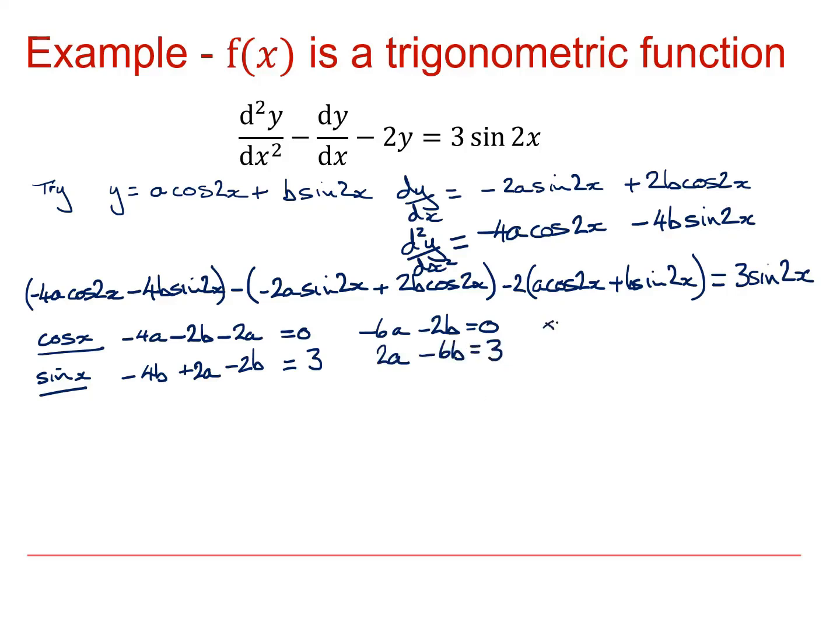Triple the top one and take them away. I'm going to end up with 20a is equal to 3. So a is equal to 3 over 20. And if a is 3 over 20, plugging that into here, I'm going to get that b is equal to minus 9 over 20. So my particular integral is y equals 3/20 cos 2x minus 9/20 sin 2x.